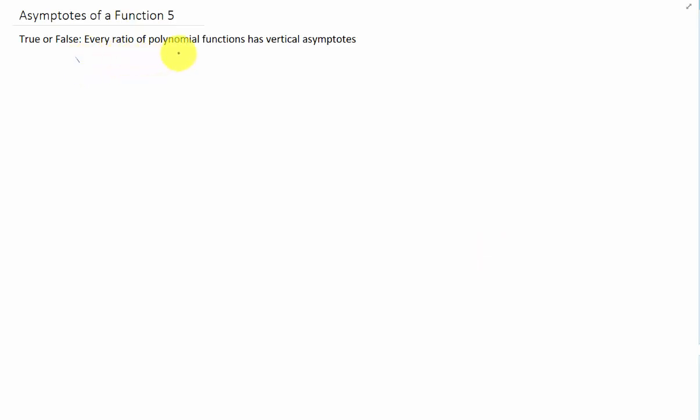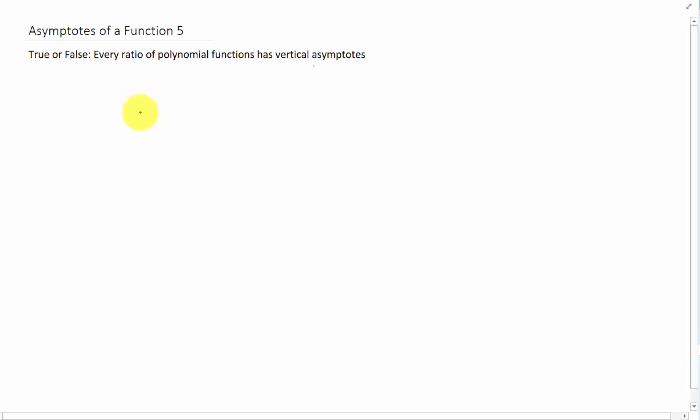True or false, every ratio of polynomial functions has vertical asymptotes. Now a ratio of polynomial functions is just one polynomial divided by another polynomial.